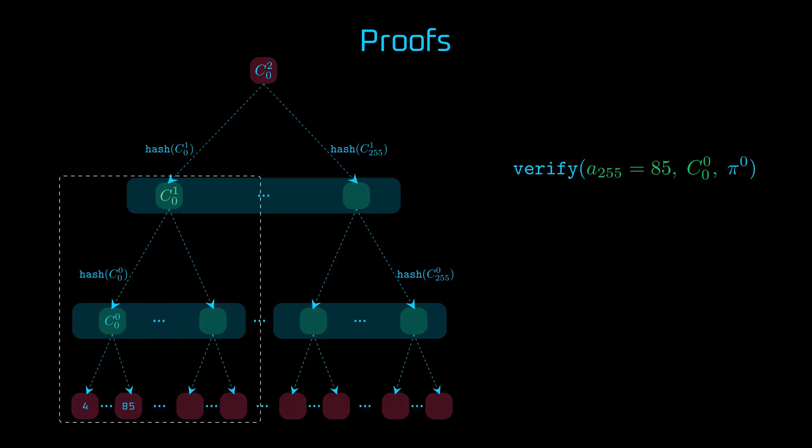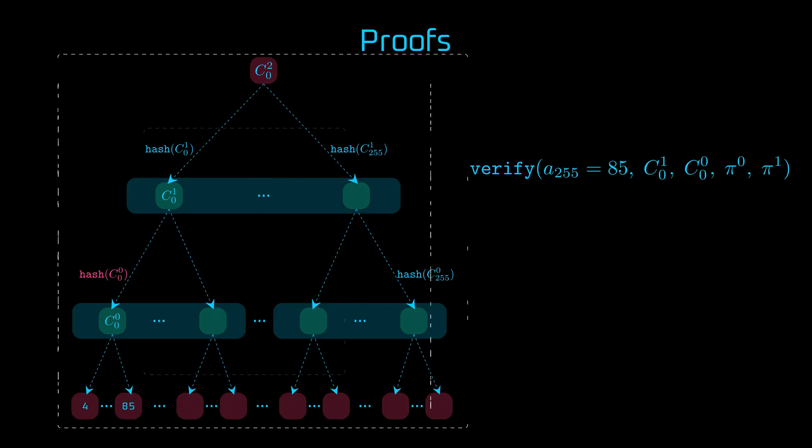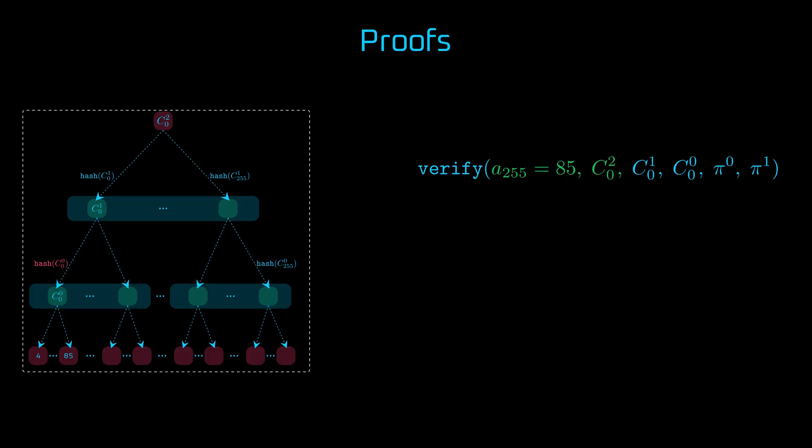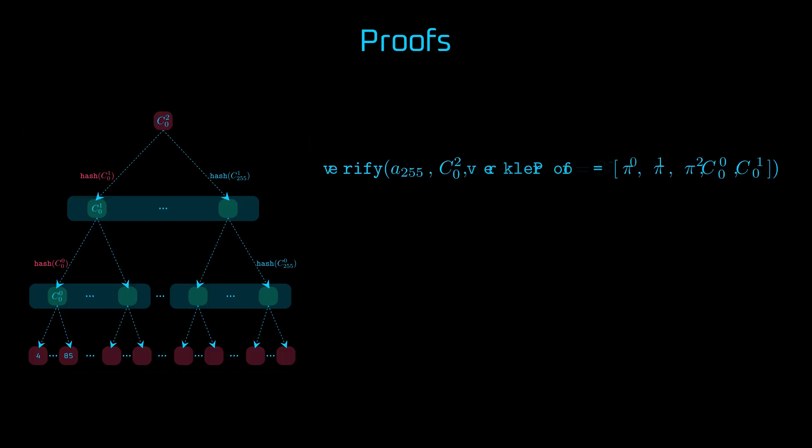Finally, at the top level, the prover must show that this parent commitment belongs to the root. This involves the root commitment, a hash of C01, which is an opening, and yet another proof, PI2. So in total, to build a verkle proof that 85 belongs to the tree, we'd need three opening proofs and two commitments. Openings and root commitments, which are needed for verification, are public.